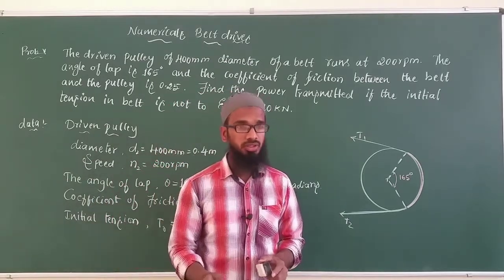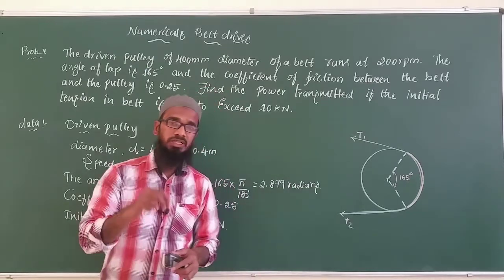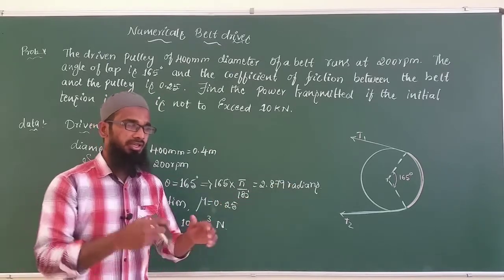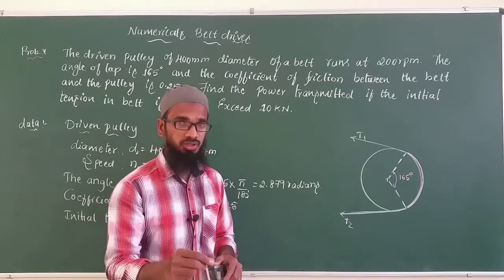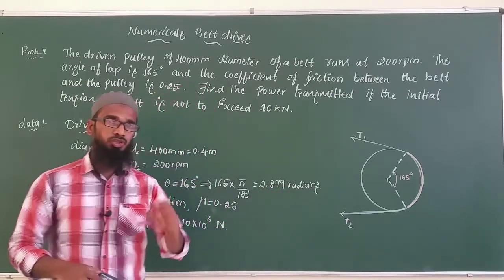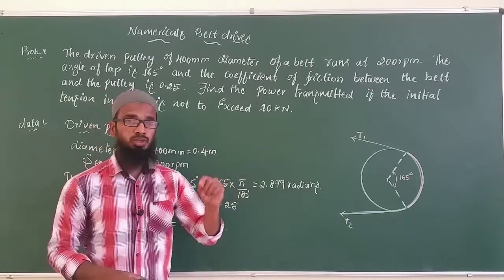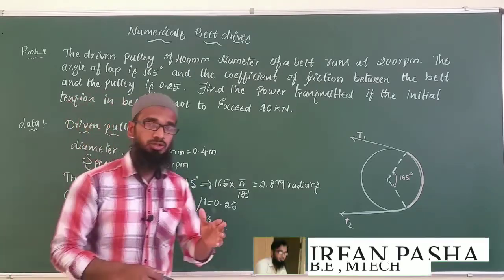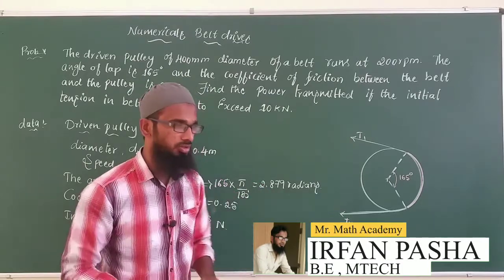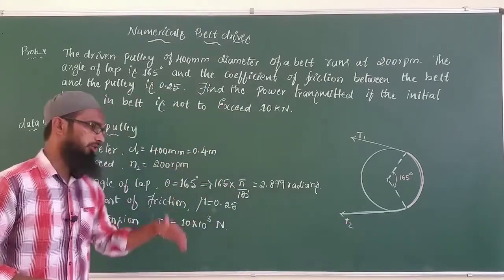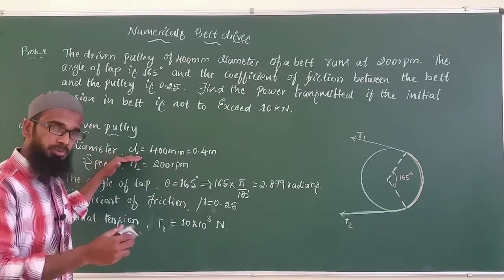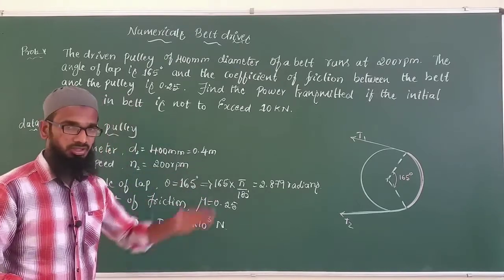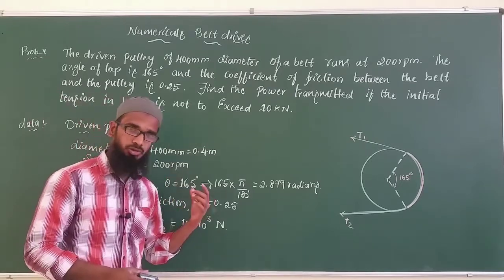The initial tension in the belt should not exceed 10 kilo-newtons. Initial tension means: before transmitting power, when you place the belt on the driver and driven pulleys, it exerts some amount of tension called initial tension. Now, organizing the given data: diameter of driven pulley d₂ = 400 mm = 0.4 m, speed n₂ = 200 rpm.